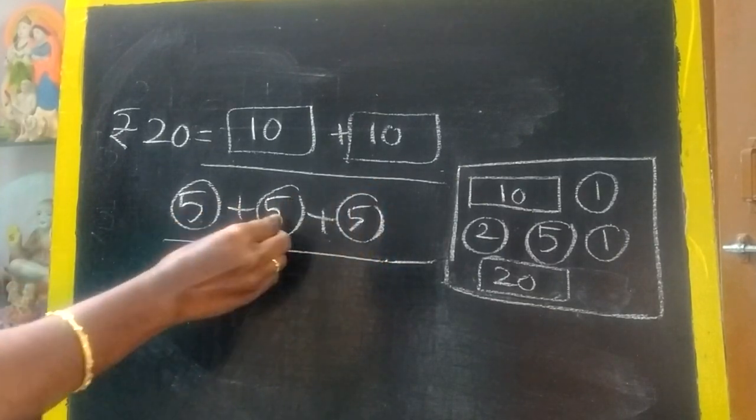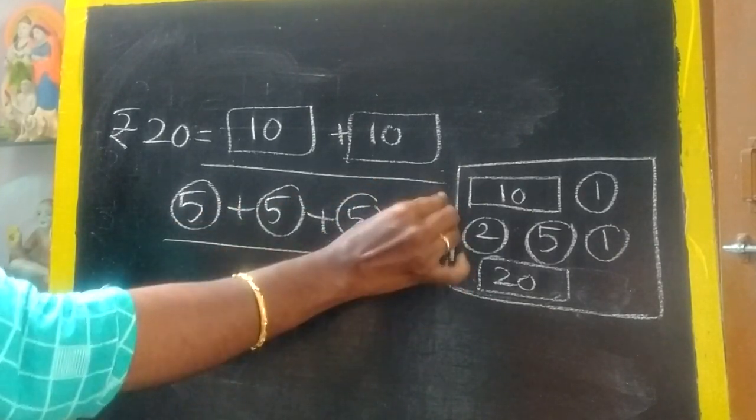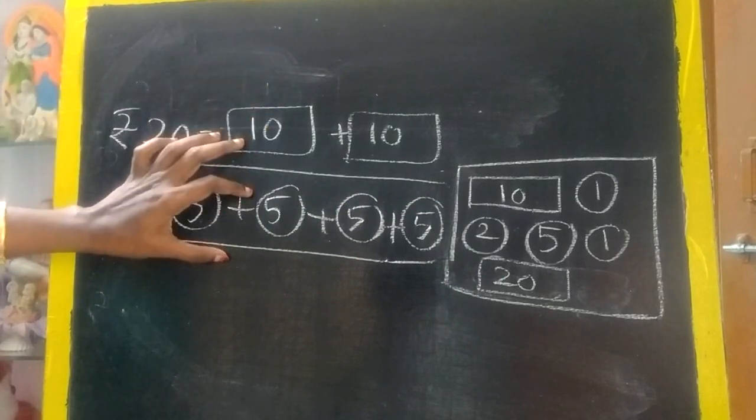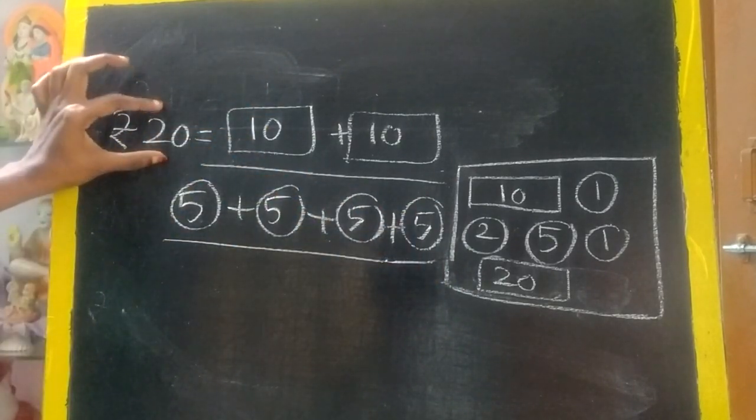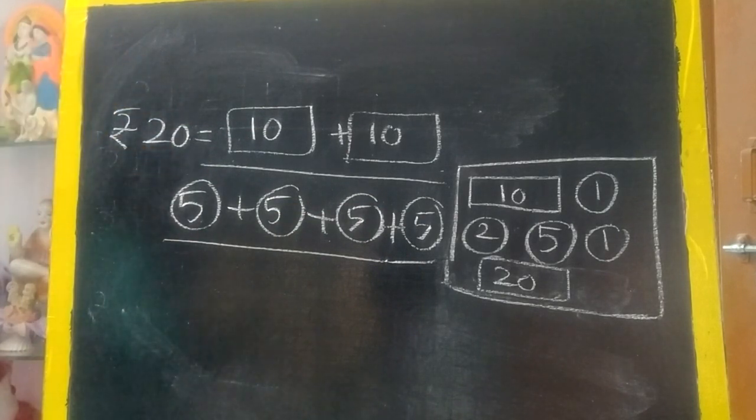See, 5, 10, 15. Again, one more 5. So, 20. Either this way or this way or even you can give 20 rupee note. Use this 20 rupee note only. More than 20 rupee note, you will use 20 rupee note. More than 20 rupees.